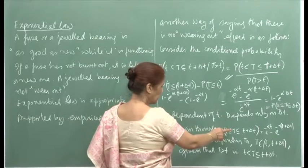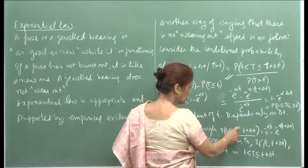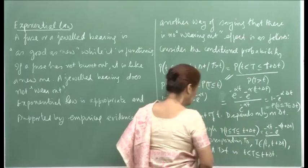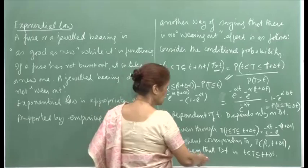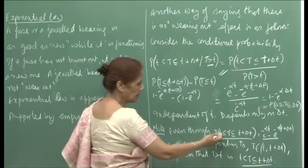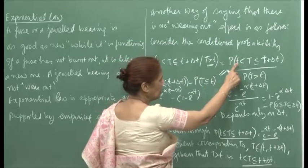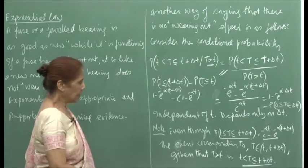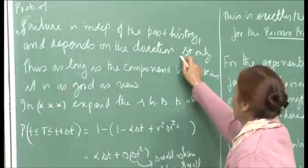A note here: even though the probability with T less than or equal to capital T less than or equal to t plus delta T would also come out the same, since we are considering the conditional probability given that T is greater than capital T, we have to use the strict inequality. So the correct event is t strictly less than capital T, and it is less than or equal to t plus delta T. In the continuous case, the two probabilities may come out the same — that is the important point.